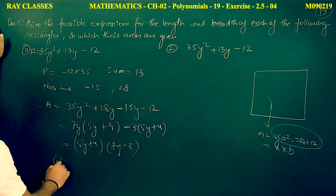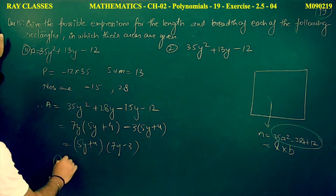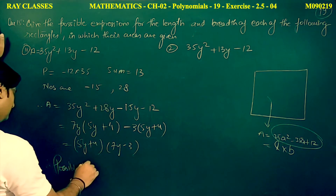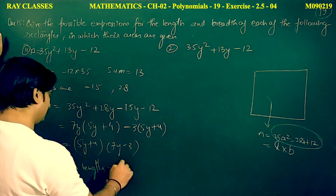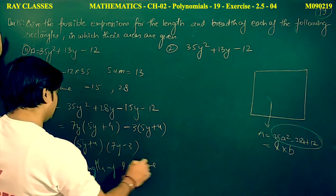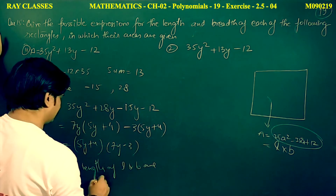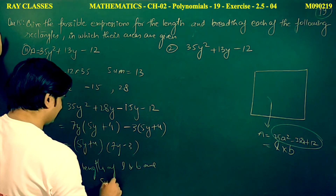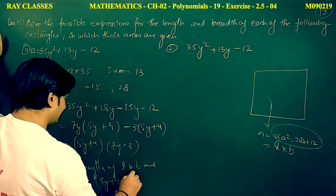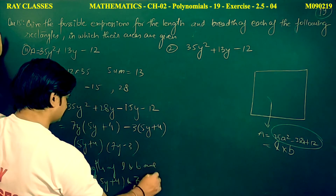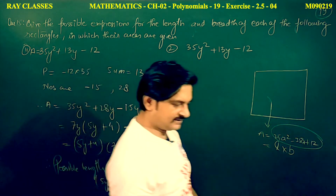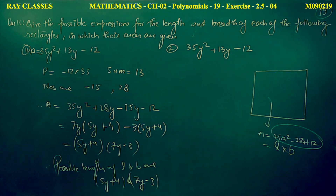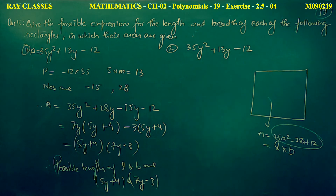Therefore possible values of length and breadth are (5y plus 4) and (7y minus 3). This completes question number 15. Let's move on to the last question of this exercise.